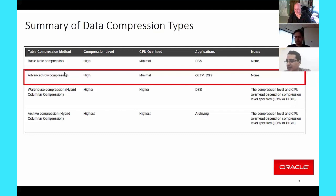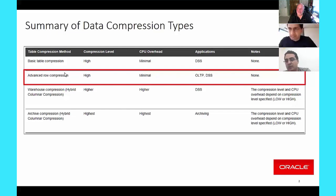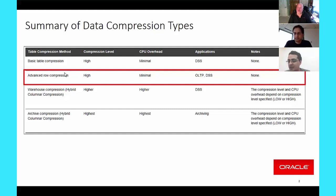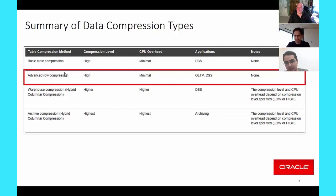There are two things to analyze. One is the scan path—when we're doing queries, we'll actually have a performance improvement. On the DML side of things, normally it's from 3% to 5% overhead as mentioned, and people can find this in the white paper published out there.